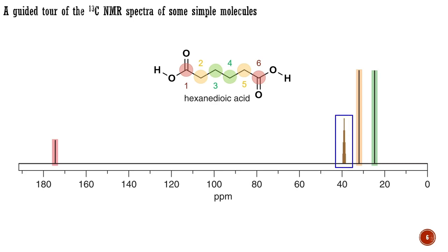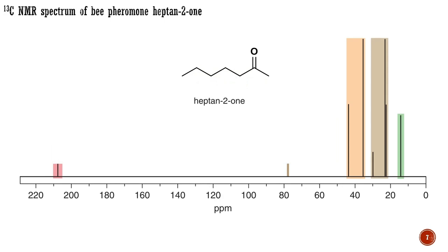Heptanone is the bee pheromone mentioned earlier. It has no symmetry, so all its seven carbon atoms are different. The carbonyl group is easy to identify at 208 ppm, but the rest are more difficult. The two carbon atoms next to the carbonyl group come at lowest field, while C7 is at the highest field at 13 ppm. It is important that there is the right number of signals at about the right chemical shift. If that is so, we are not worried if we cannot assign each frequency to a precise carbon atom. Do not be concerned with the intensities of the peaks in carbon NMR.